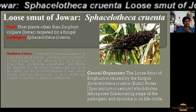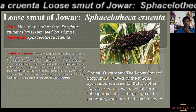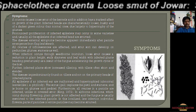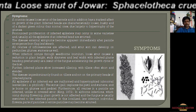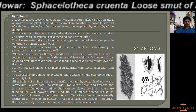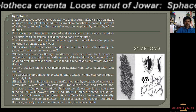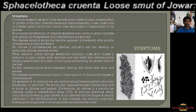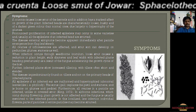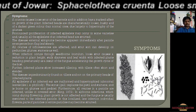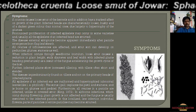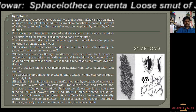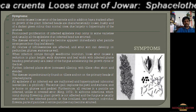If you observe the smut spores of this pathogen, these are teliospores which are round or globose, sometimes sub-globose, or spherical to elliptical, light yellowish brown to dark brown in color. In microscopic detail, in terms of biometric data, their dimensions are around 5 to 10 microns. More often, they remain viable for nearly 4 years. This is a very interesting fact to know about the pathogen.